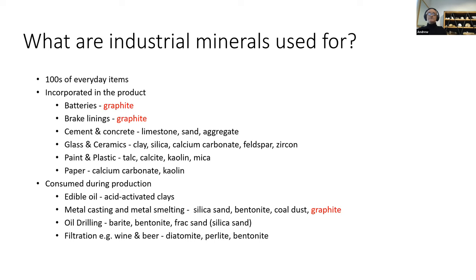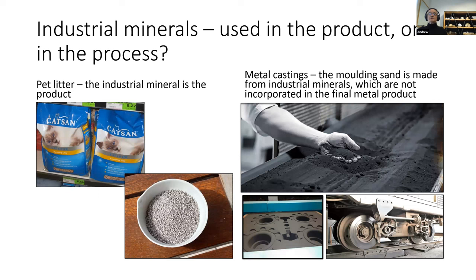Some photo examples: the picture on the left is catheter, where the industrial mineral is the actual product. On the right, you can see sand made out of silica sand and coal dust, and bentonite, which is made into molds to cast things like disc brakes and disc brake calipers. In that case the industrial mineral doesn't actually make it into the final product.